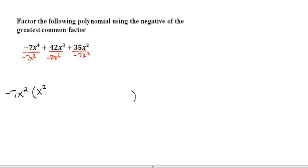42 divided by a negative 7 would be a negative 6. Better watch the signs there, right? Positive divided by a negative is negative. x cubed over x squared is just x.